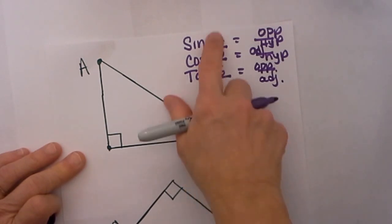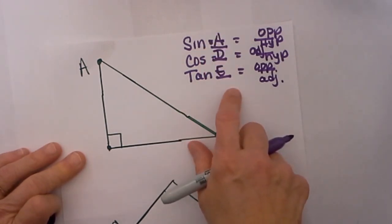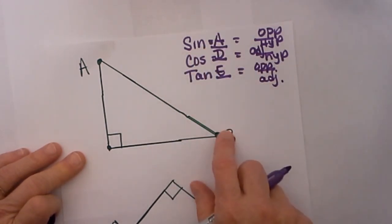So we are going to look at three different triangles and three different ratios and how to identify opposites and adjacent.